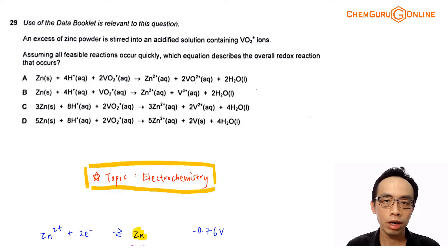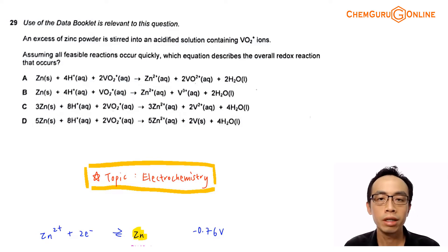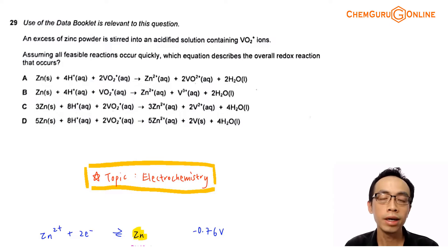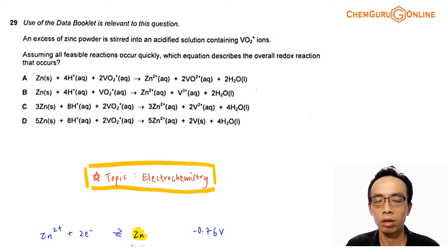Hi everyone, this is Maverick Pond, the chemistry guru. In this video, we want to discuss the suggested solution for 2021 A-levels H2 chemistry, paper 1, question 29.